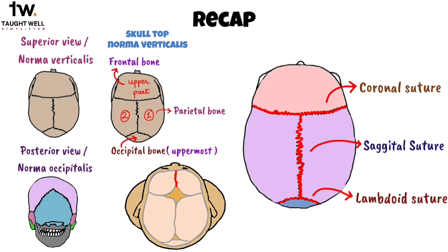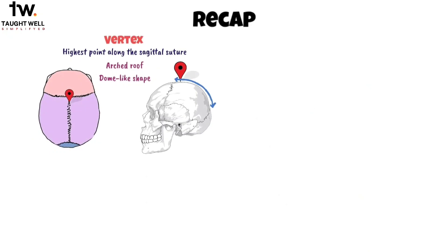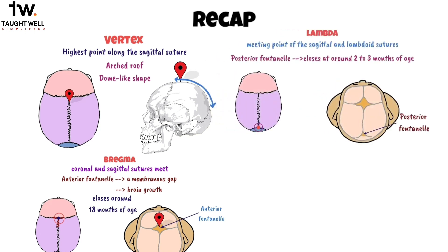Other named features include the vertex, forming the highest point along the sagittal suture, and the vault of the skull, giving it a dome-like shape. The bregma is where the coronal and sagittal sutures meet, with the anterior fontanelle closing around 18 months in fetal skulls. The lambda, the meeting point of the sagittal and lambdoid sutures, has the posterior fontanelle closing at 2–3 months in fetal skulls.